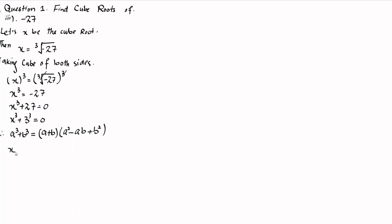So we have x plus 3, into x squared minus 3x, plus b squared which is 3 squared, and 3 squared is 9. That is equal to 0.